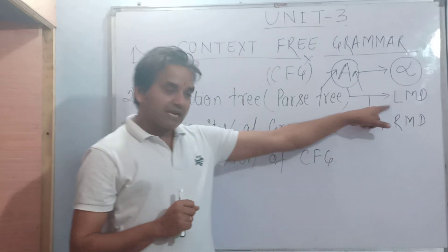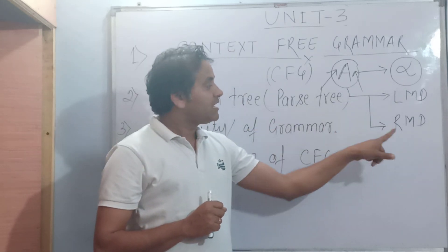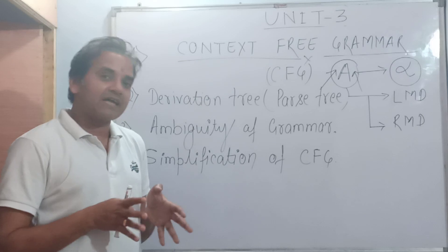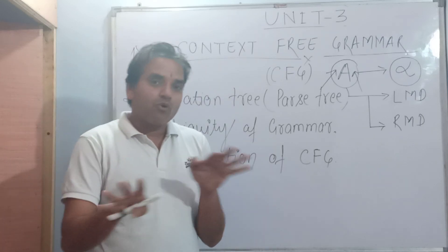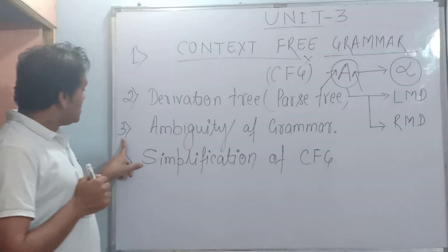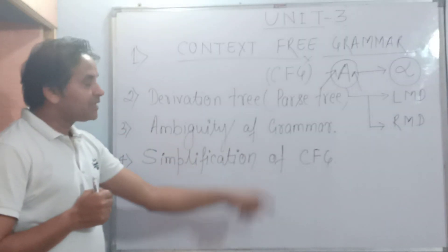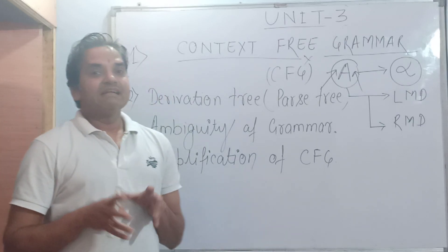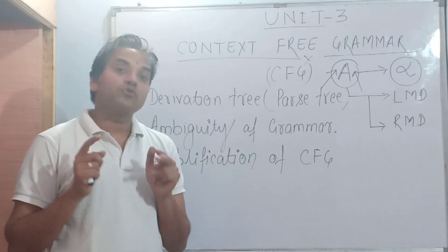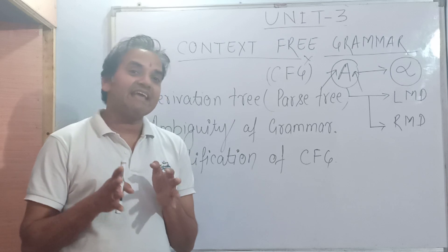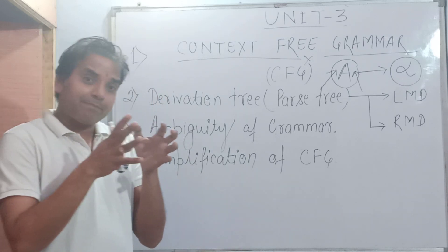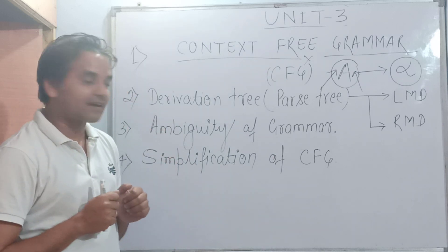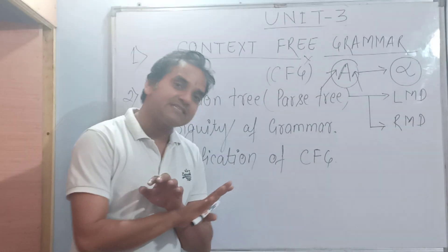In a rightmost derivation tree, we replace the rightmost symbol at every step. Now, the third topic is ambiguity of grammar. A grammar is said to be ambiguous if there are two or more than two derivation trees that exist for the given grammar. If you have a particular string and two or more derivation trees exist for it, then the grammar will be ambiguous; otherwise it will not.